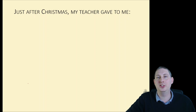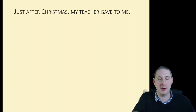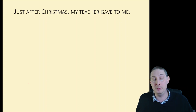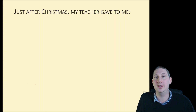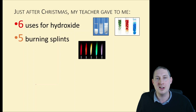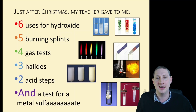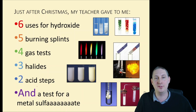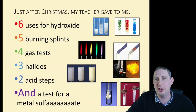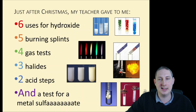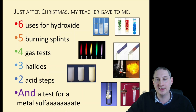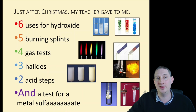Those of you in my sets will almost certainly have heard me sing through the six tests of C8. Just to remind you, this is what you need to know — you won't be given these tests, you need to learn them. To the tune of the Twelve Days of Christmas: six uses for hydroxide, five burning splints, four gas tests, three halides, two acid steps, and a test for a metal sulfate. That means: six precipitates you need to know for sodium hydroxide; five flame test colours; four gas tests; three halide colours; two things you do to identify a carbonate; one test to identify a metal sulfate. Make sure you know those.